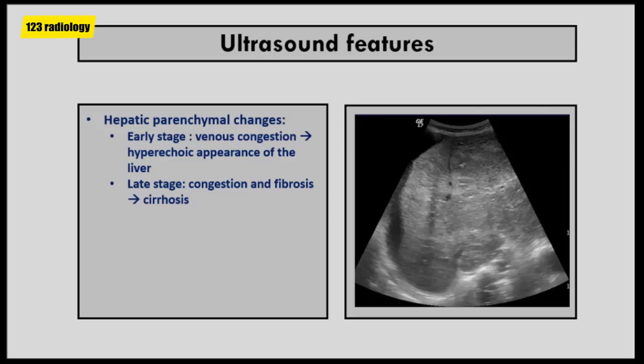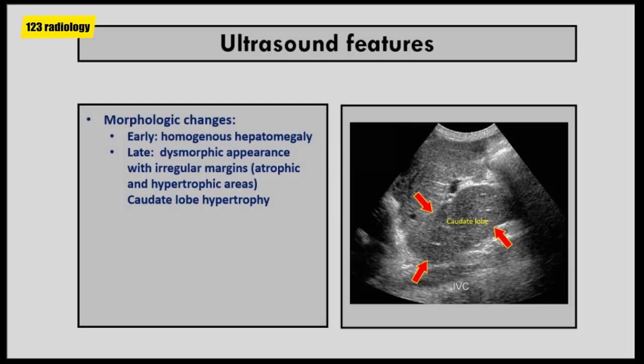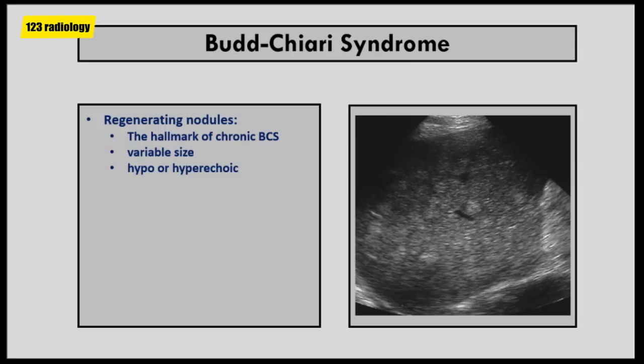In the chronic stage of disease, in addition to hepatic congestion, fibrosis is present, leading to cirrhosis. In Budd-Chiari syndrome, the liver undergoes morphologic changes during the course of disease. In the acute stage, the liver is enlarged with a homogeneous echo pattern and smooth contour. During chronic stage, atrophic and hypertrophic areas may coexist, giving a dysmorphic appearance with irregular margins — areas affected become atrophic while healthy areas undergo compensatory hypertrophy. Caudate lobe hypertrophy is a frequently noted morphological sign. Regenerating nodules are the hallmark of chronic Budd-Chiari syndrome; they are commonly multiple and variable in size, and may be hypo- or hyperechoic on ultrasound.